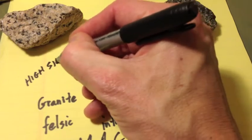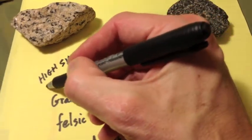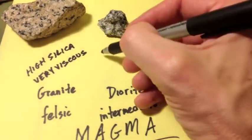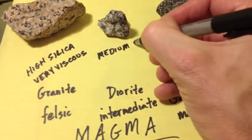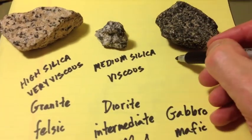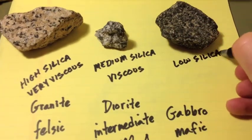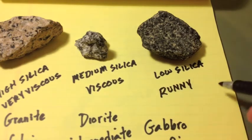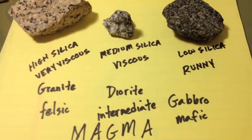So, once again, high silica, granite, granitic, felsic, is very viscous, creates caldera eruptions like Yellowstone. Medium silica is very viscous, not extreme. It can create some stratovolcanoes, and the low silica is runny and it makes Hawaiian shield-type volcanoes.